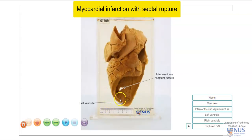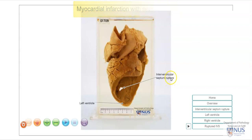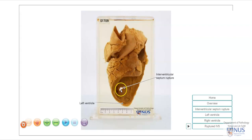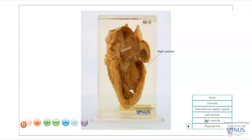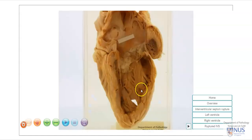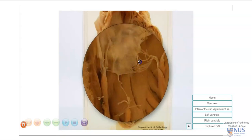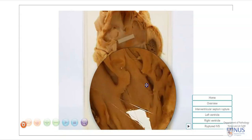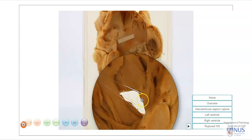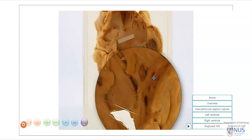Here we can see the left ventricle, and here is the area of rupture of the interventricular septum with a full thickness defect leading to the right ventricle. This is the right ventricle posteriorly, and we can see that the wall is much thinner. Let me just magnify this area of the defect — here is the rupture.